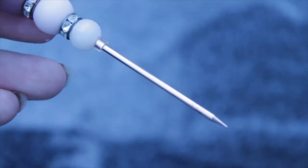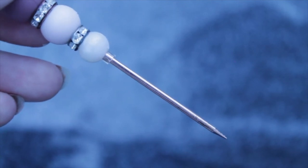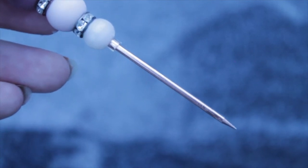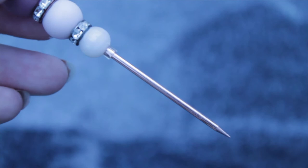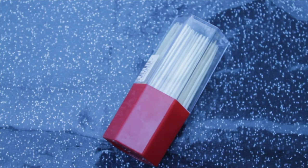This particular scribe retails for 12 UK pounds on Etsy. Now say that you don't want to invest in a scribe right away. A really good alternative is wooden cocktail sticks. You probably have them in your cupboard already.